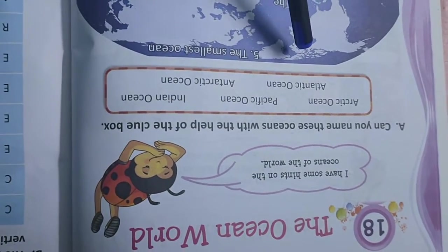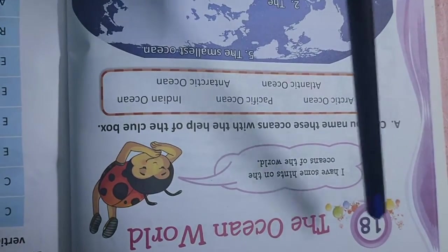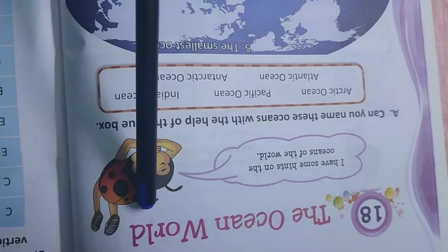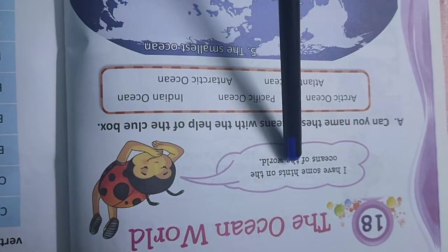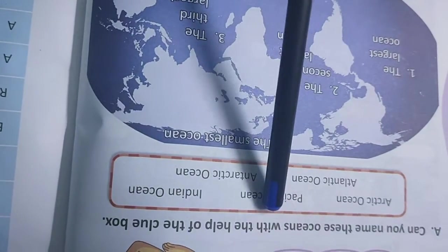Good morning class 2 children. Now let us start GK chapter 18, the ocean world. I have some hints on the oceans of the world. Can you name these oceans with the help of this clue box? The Arctic Ocean, Pacific Ocean, Indian Ocean, Atlantic and Antarctic Ocean.